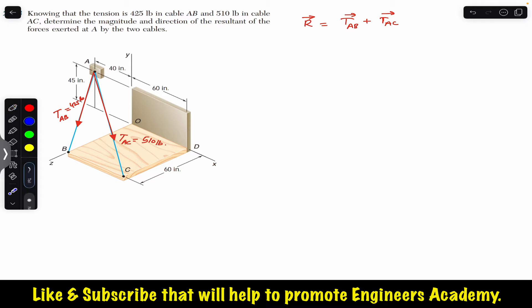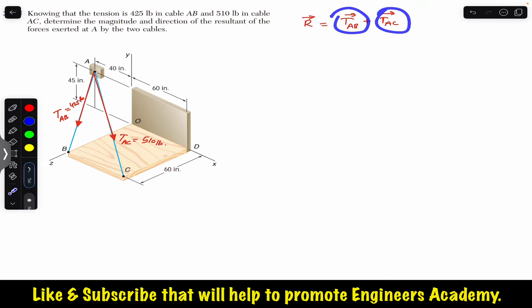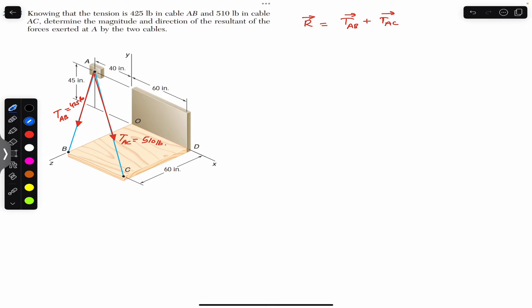In order to find the resultant, we need to find TAB and TAC in terms of i, j and k — that is, in terms of the Cartesian vector representation. So TAB vector will be equal to TAB magnitude, which is 425, times the unit vector from A to B. The unit vector from A to B is the position vector from A to B divided by the magnitude of that position vector. So TAB Cartesian vector will be equal to 425 times that unit vector.